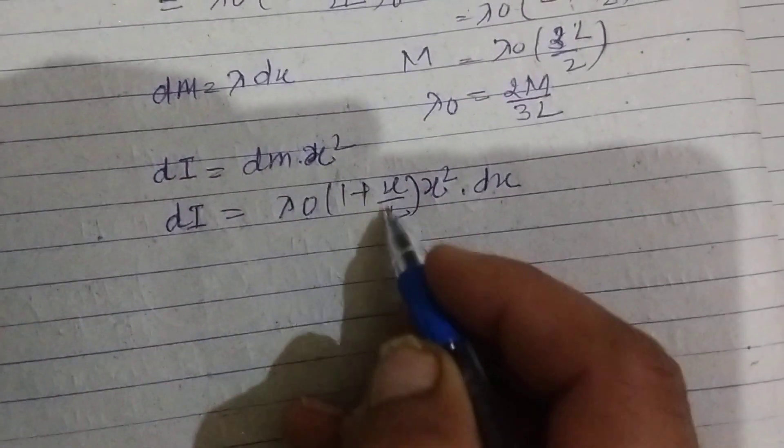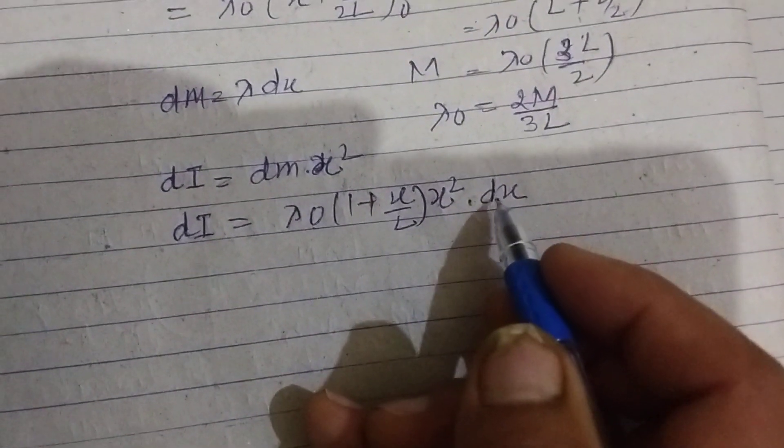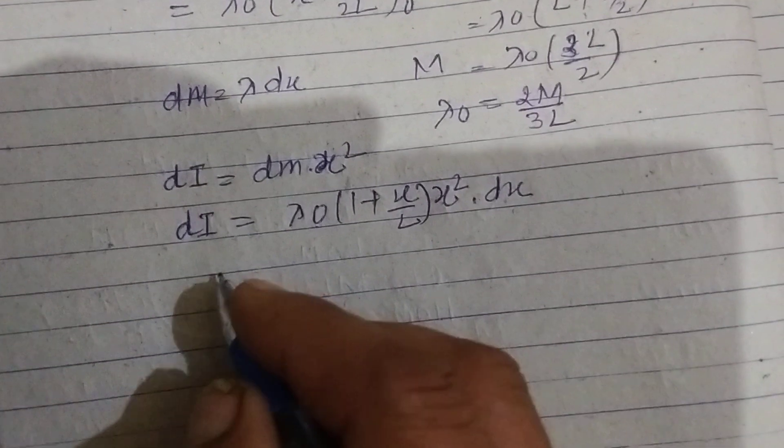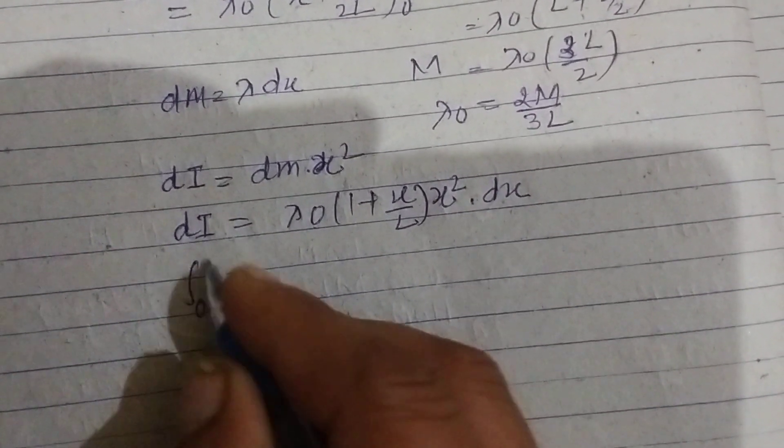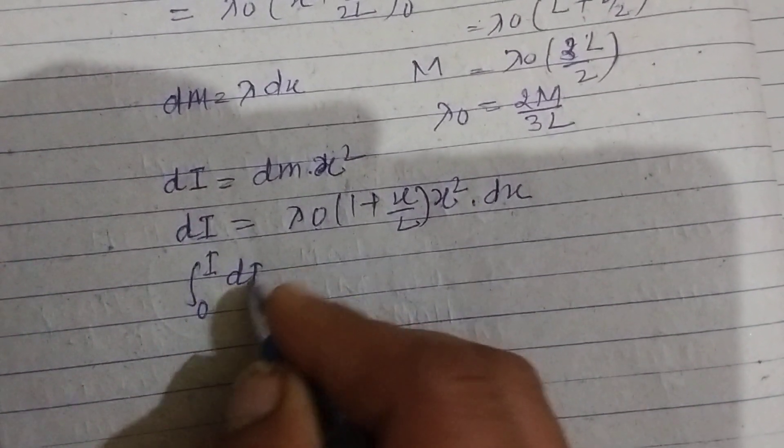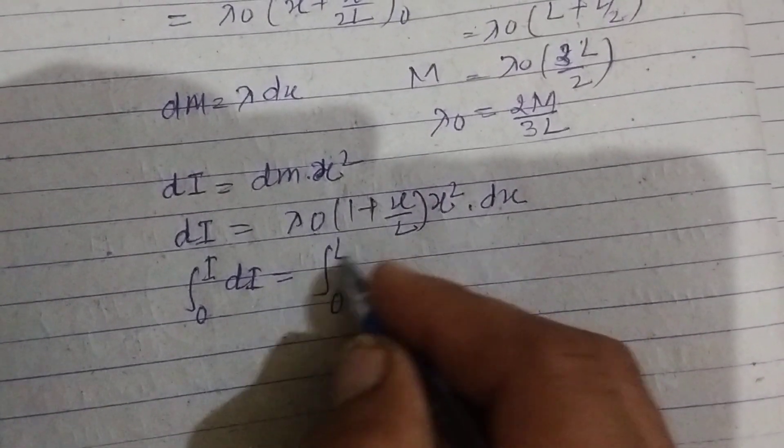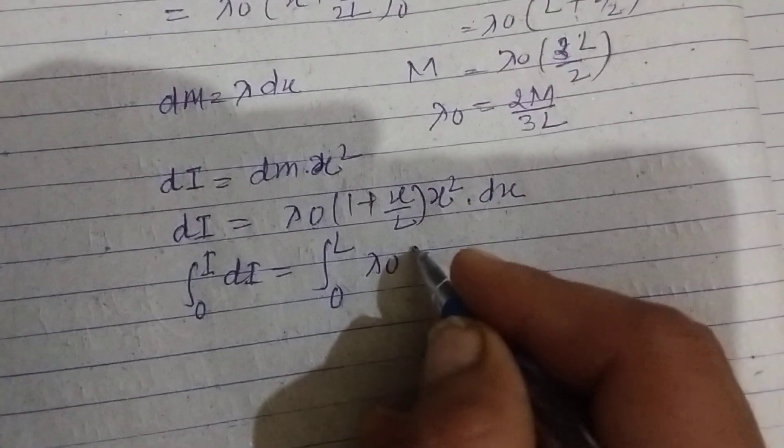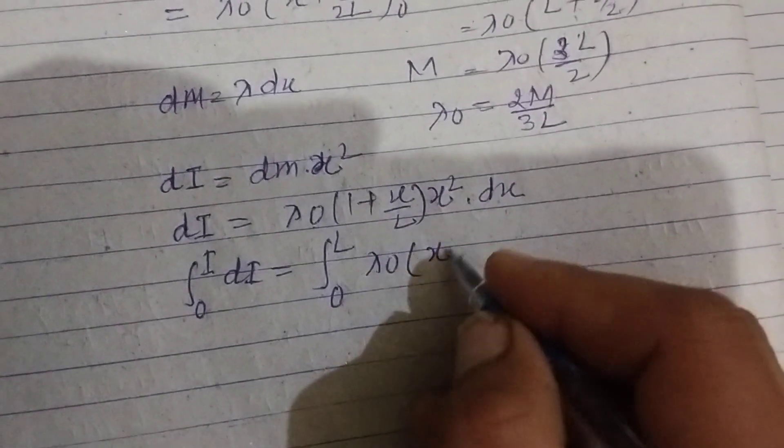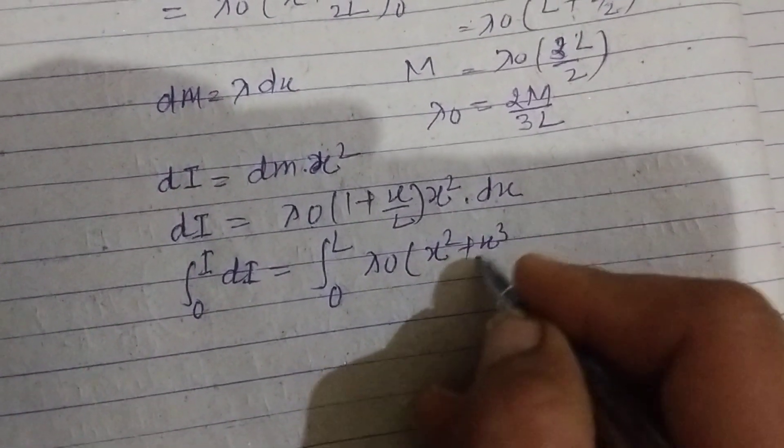dm is lambda into dx as written above, so we put the value of dm which is lambda into dx and lambda is lambda naught times 1 plus x over L into x square dx. Now integrating both sides, 0 to I, dI equal to lambda, this is 0 to L, lambda naught, this is x square, x cubed by L into dx.